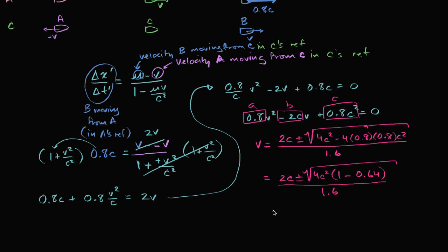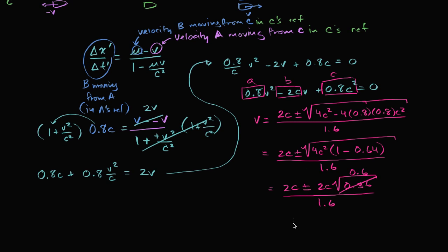This is all algebra at this point. Taking the 4c squared out of the radical gives 2c, so we have 2c plus or minus 2c times the square root of 1 minus 0.64, which is 0.36. Things are getting nicely simple now — all over 1.6. The square root of 0.36 is 0.6. So this becomes 2c plus or minus 1.2c, all over 1.6.